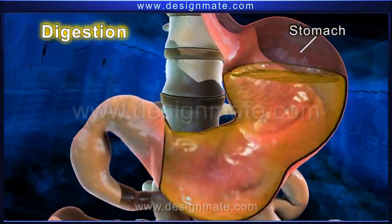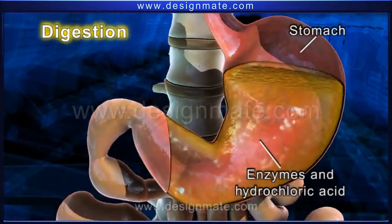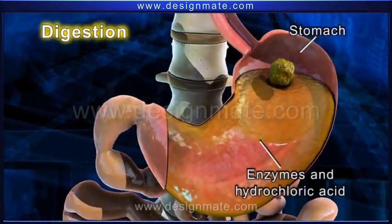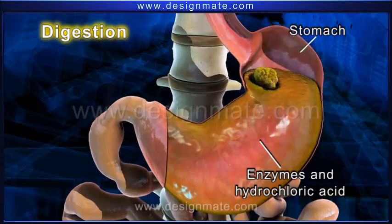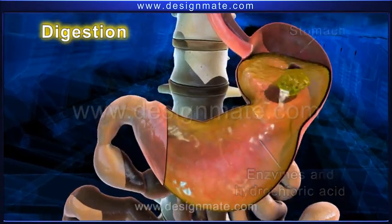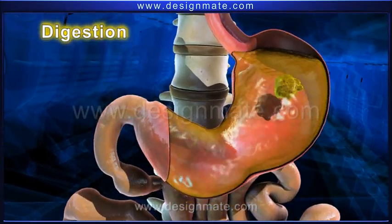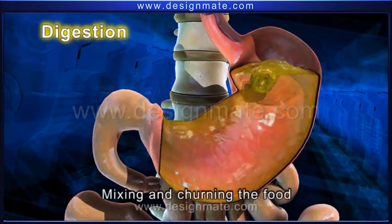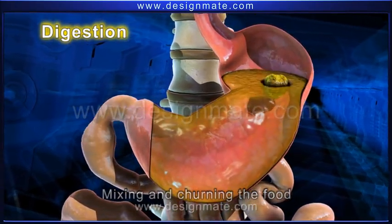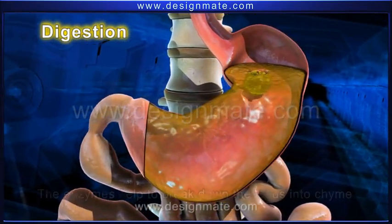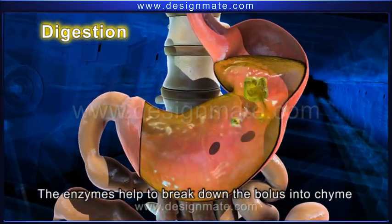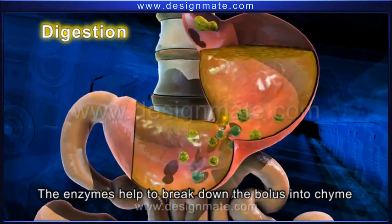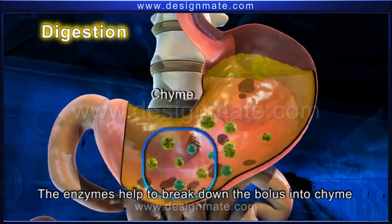The stomach contains a few enzymes and hydrochloric acid. The muscular wall of the stomach helps in mixing and churning the food, which helps to break down the bolus into a mass known as the chyme.